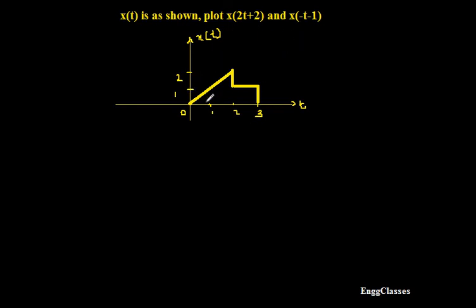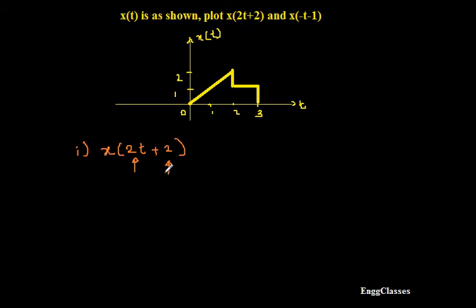As you can see, x of t is a continuous time signal. Let me consider sketching x of 2t plus 2. Before I actually sketch this signal, let me understand what operations are involved. If I consider x of 2t, there is time scaling, and if I consider the plus 2, there is time shift. So which one do I do first? That can be determined by the precedence rule, which says I have to do time shifting first and later time scaling.